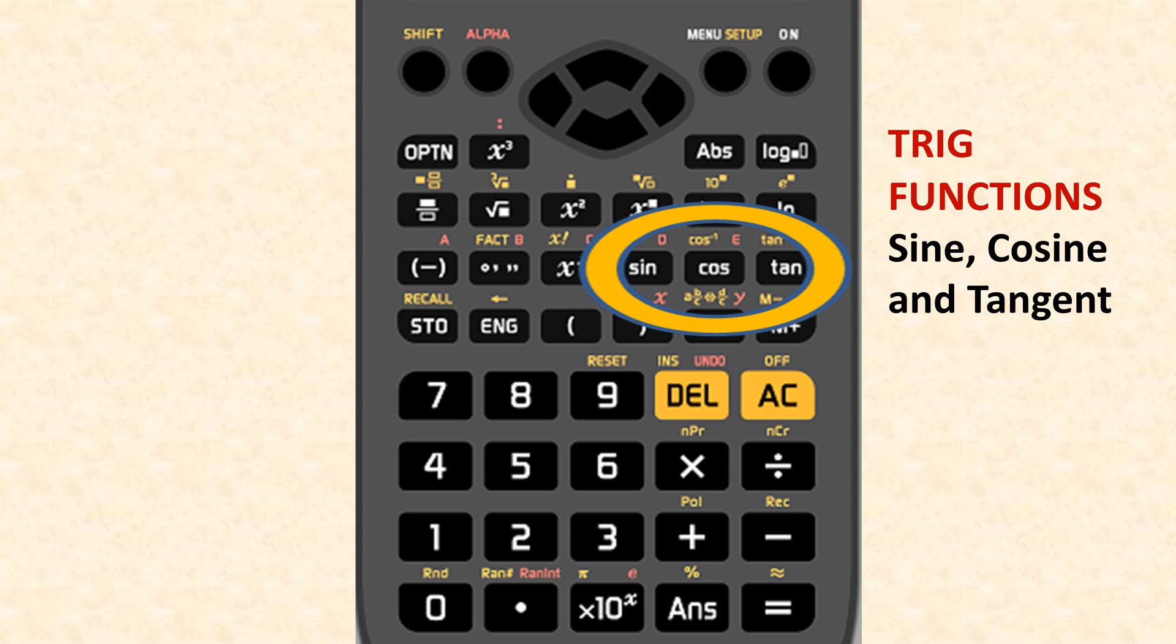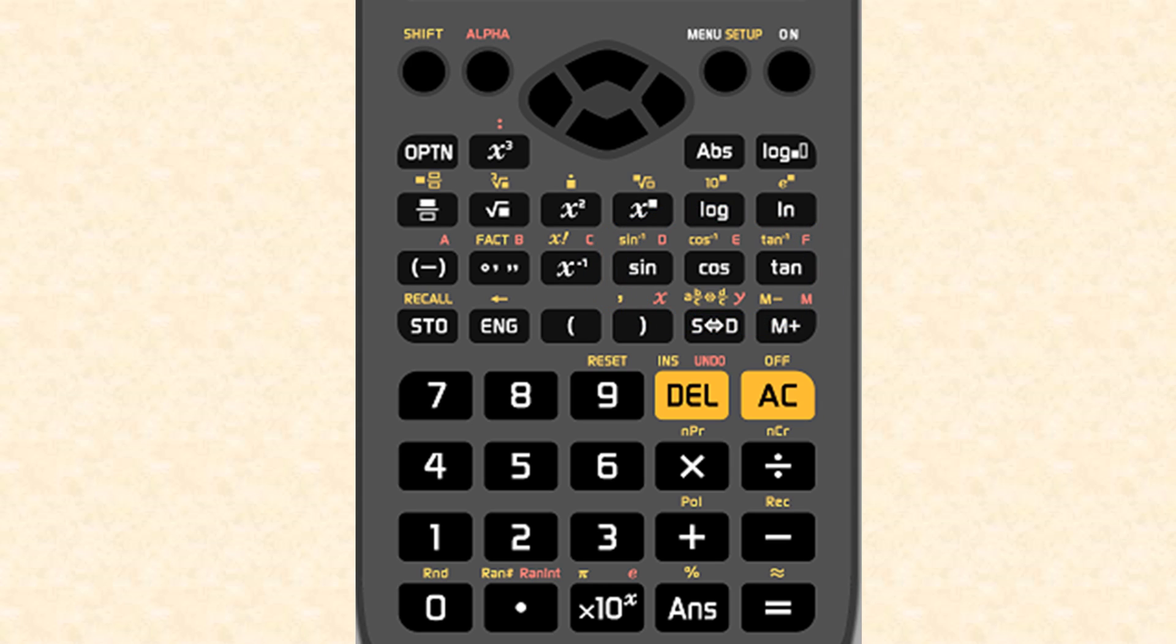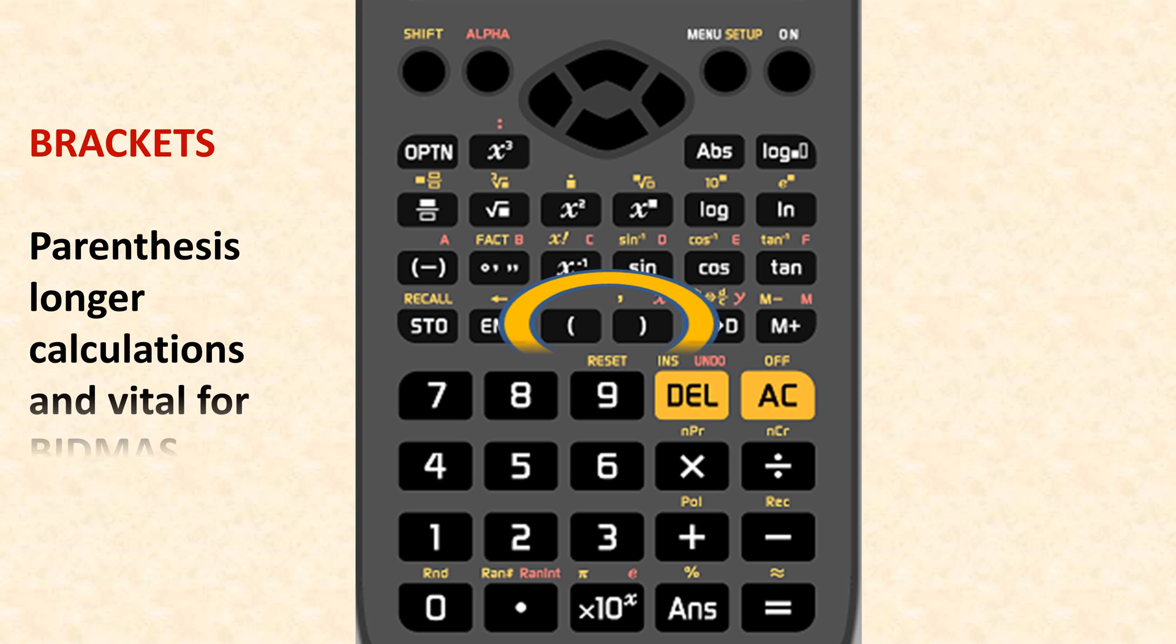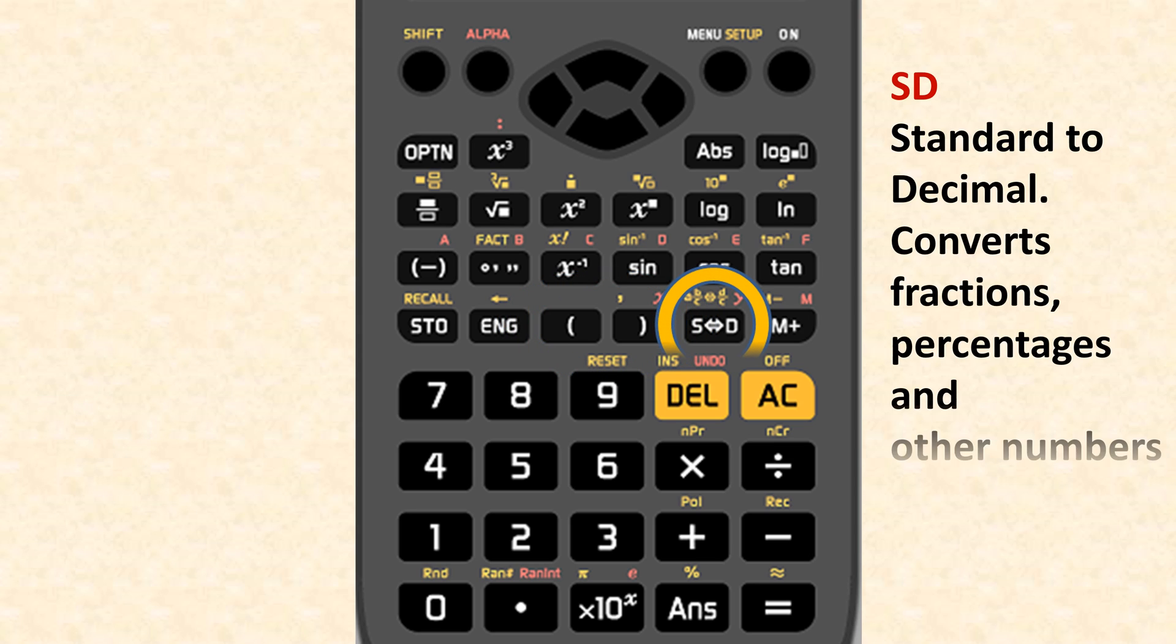Here you have the sin, cos, tan, which are your trigonometry functions, and then brackets. This is your parentheses for longer calculations, but this is vital for BODMAS. Then you have your SD, which converts standard to decimal.